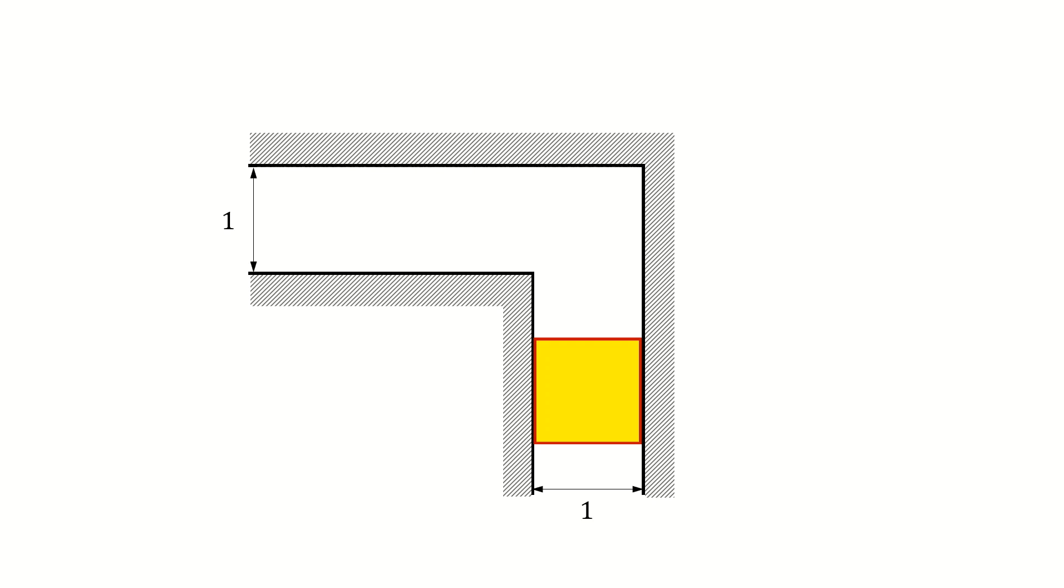Can we do better than the square sofa now? If you notice a semicircle sofa can also do the job. This sofa has even a larger area than the square sofa and as we can see it rotates around the corner.